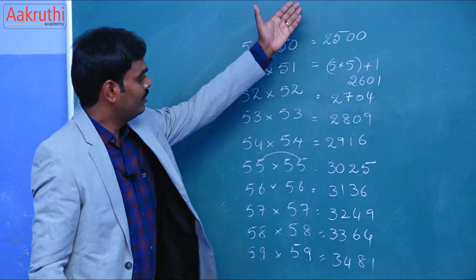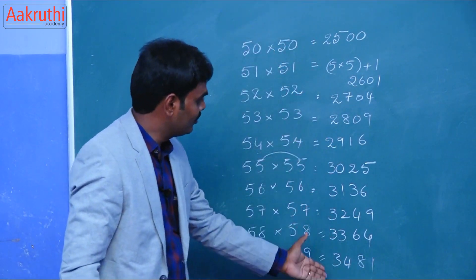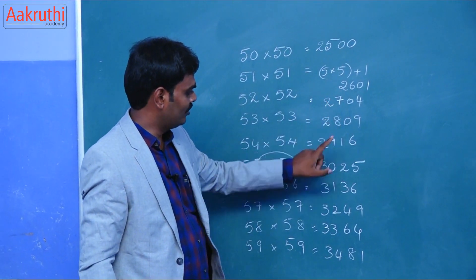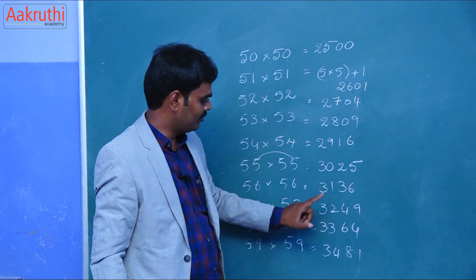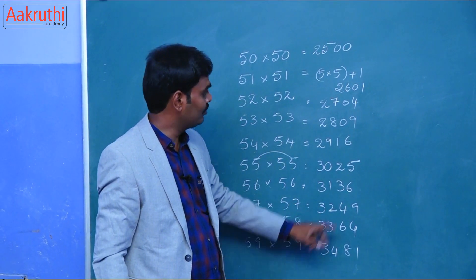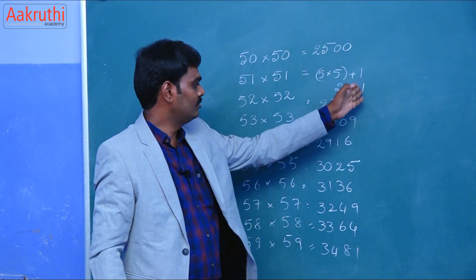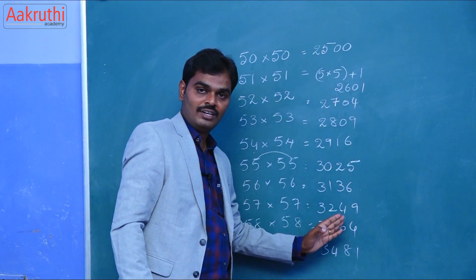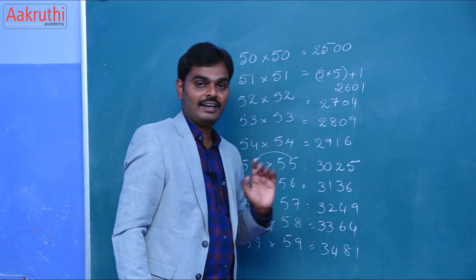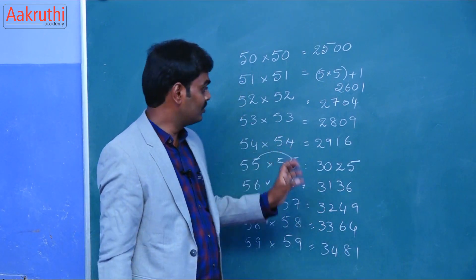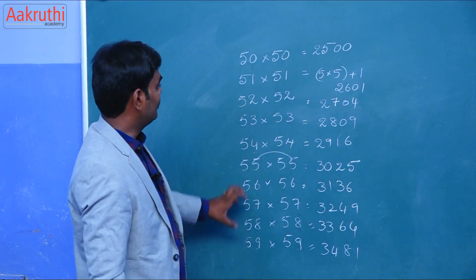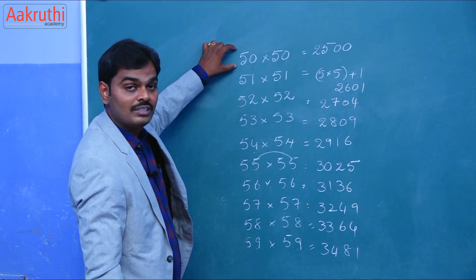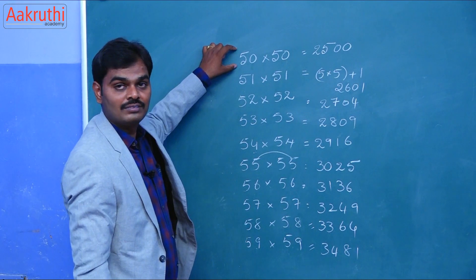Here also we can observe the sequence: 25, 26, 27, 28, 29, 30, 31, 32, 33, 34. And here 0, 1, 4, 9, 16, 25, 36, 64. So this is the shortcut for the numbers that start with 5.